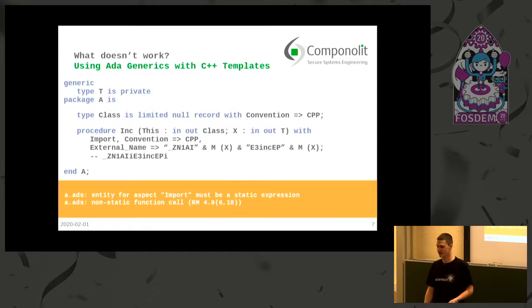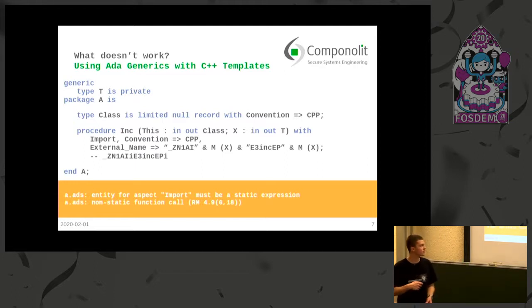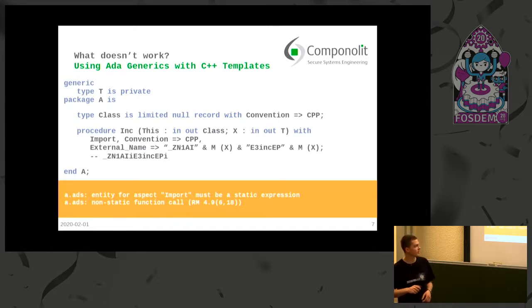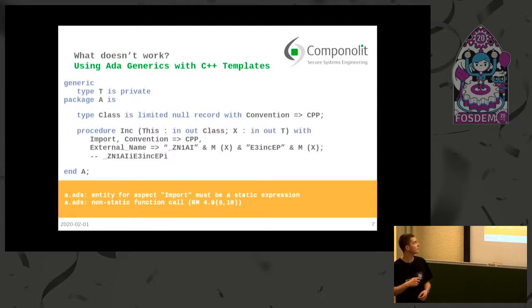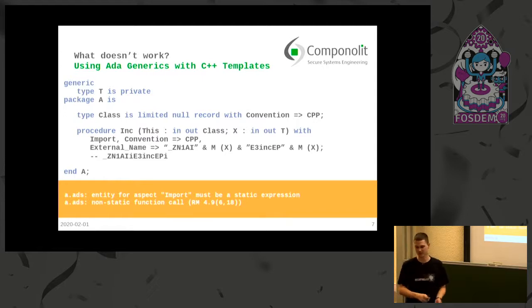We want to implement this as an Ada generic, and we don't want to generate the binding statically — we want to generate it automatically. So we would have to generate the symbol in the external name at compile time. The problem is: when we call the function that generates the correct symbol part for the type of X — where X is of type T — and we generate a string from X which is type-specific, this isn't static. The Ada reference manual says the template argument is never static, so we will never be able to include the template argument in the symbol name. This just doesn't work.